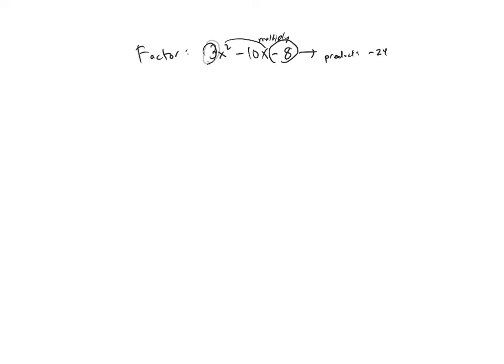Now I want two numbers that give me a product of negative 24 and give me a sum of whatever b is, which in this case would be negative 10. So I want two numbers that have those properties. If I don't get two numbers that have those properties, this is not factorable and we would say that this is prime.